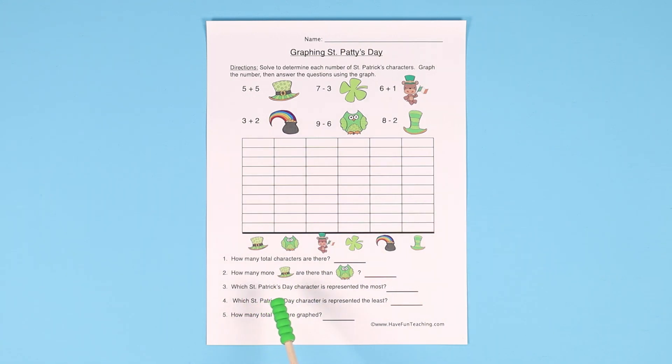How many more hats are there than owls? So they find there are 10 hats and there are 5 owls, so 10 minus 5 would be 5.